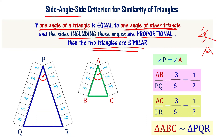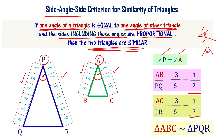Therefore, triangle ABC is similar to triangle PQR. The SAS criterion for similarity of triangles states: if one angle of a triangle is equal to one angle of the other triangle, and the sides including those angles are proportional, then the triangles are similar. Angle P equals angle A, and the sides including angle P and angle A are in the same ratio — so triangle ABC is similar to triangle PQR.